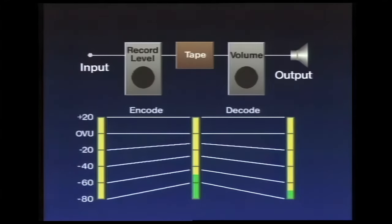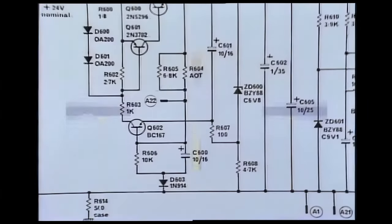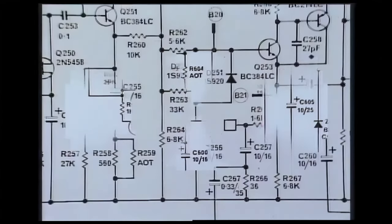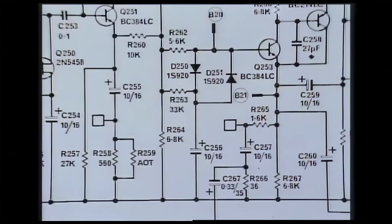However, it's not possible to obtain transparent results simply by turning the record and play levels up and down, no matter how precisely it's done. The quality of Dolby noise reduction lies in the patented methods used to process the audio signals, methods sophisticated enough to prevent you from hearing the tape noise going up and down beneath the program, as it changes from loud to soft.